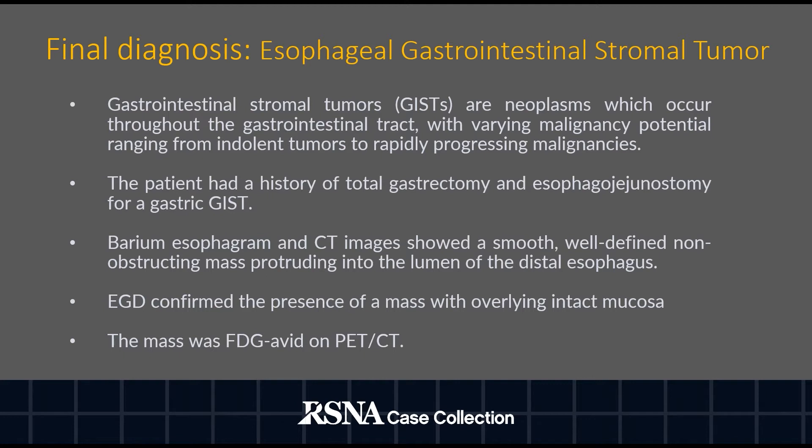Gastrointestinal stromal tumors are neoplasms which occur throughout the gastrointestinal tract with varying malignancy potential, ranging from indolent tumors to rapidly progressive malignancies. The diagnosis was established based on the history of total gastrectomy and esophageal jejunostomy for a gastric GIST.